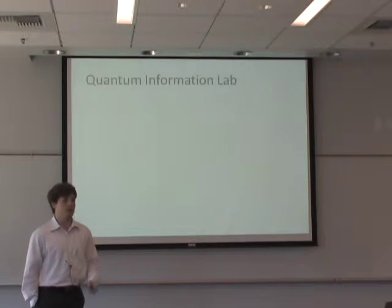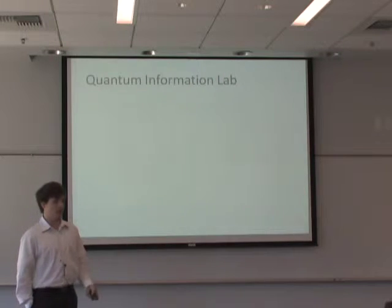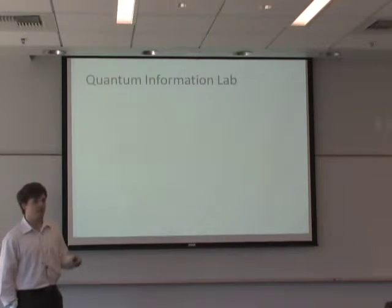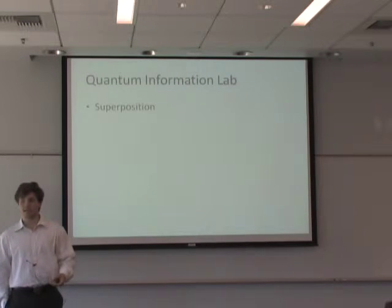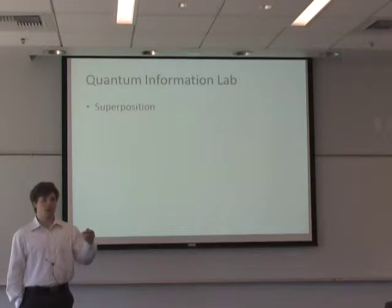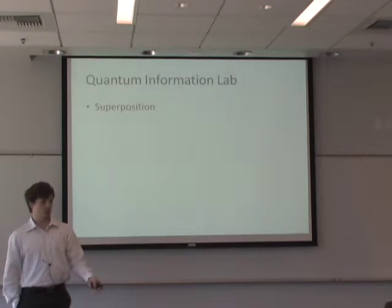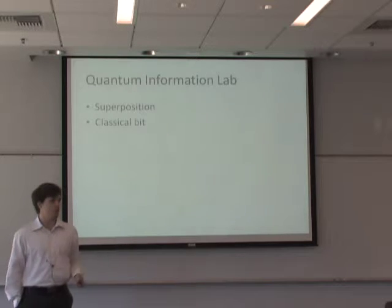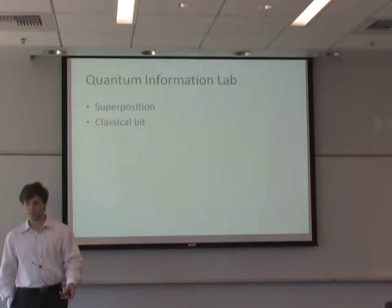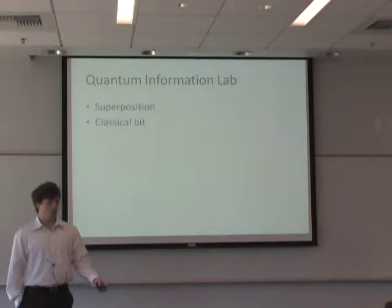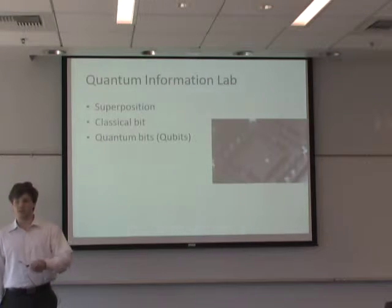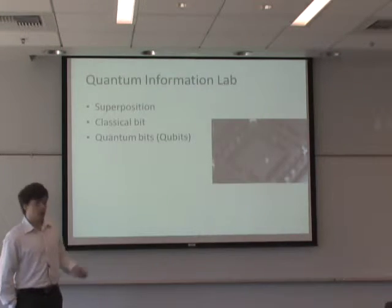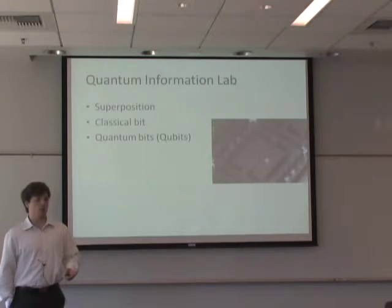I work in a quantum information lab, which means we work with qubits. To understand what a qubit is, you need some basic knowledge of quantum mechanics, namely superposition — the idea that you can be in two places at once. A classical bit is what current computers run off of: binary zeroes and ones. Taking superposition together with a classical bit gives you a quantum bit, which is a superposition of both zero and one. Right here is actually one of the qubits fabricated in our lab — those little white squares are the actual qubits.